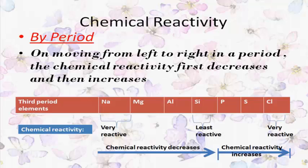Let's understand chemical reactivity along a period in the modern periodic table. When we move in a period from left to right, the chemical reactivity first decreases and then increases. In the third period, sodium is a very reactive element, magnesium is less reactive, aluminum is still less reactive, and silicon is the chemically least reactive element in the third period.